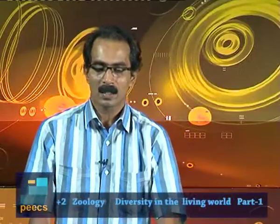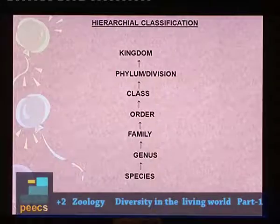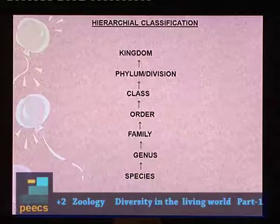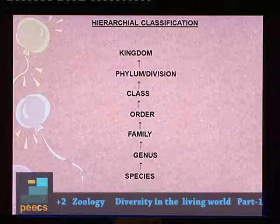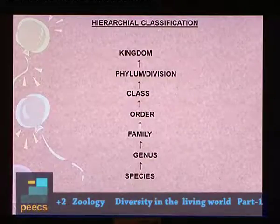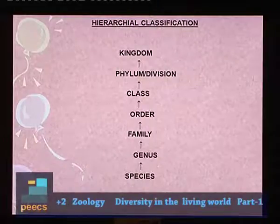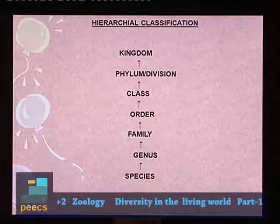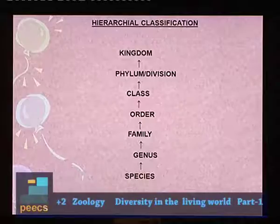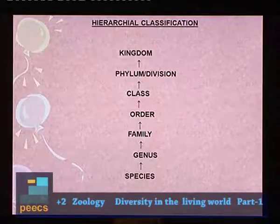This is the hierarchical classification we discussed. Species is the basic unit of classification. The categories from basic to broadest are: species, genus, family, order, class, phylum (animals) or division (plants), and kingdom.